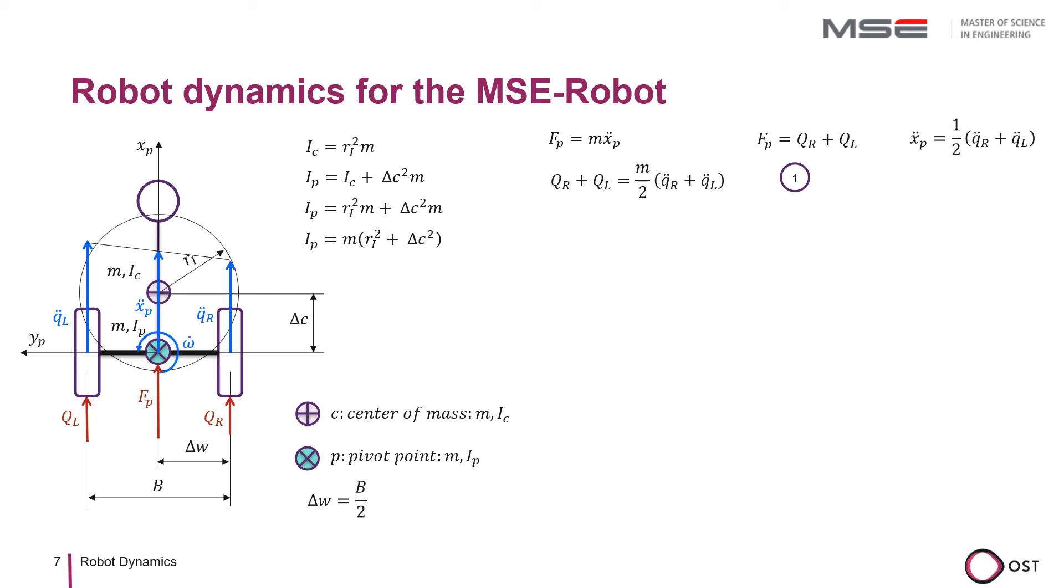Let us now set up the angular momentum theorem. Delta W times QR produces a positive torque and delta W times QL produces a negative torque. According to Newton, the sum of torques is equal to the rotational acceleration times the rotational moment of inertia IP.